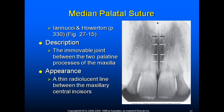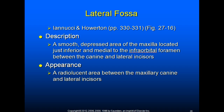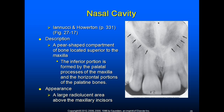The lateral fossa is a smooth, depressed area of the maxilla located just inferior and medial to the infraorbital foramen, between the canine and lateral incisors. It appears as a radiolucent area between the maxillary canine and lateral incisors and is also known as the canine fossa. The nasal cavity, also known as the nasal fossa, has lateral walls formed by the ethmoid bone and the maxilla, is divided by the nasal septum, and appears as a large radiolucent area above the maxillary incisors.